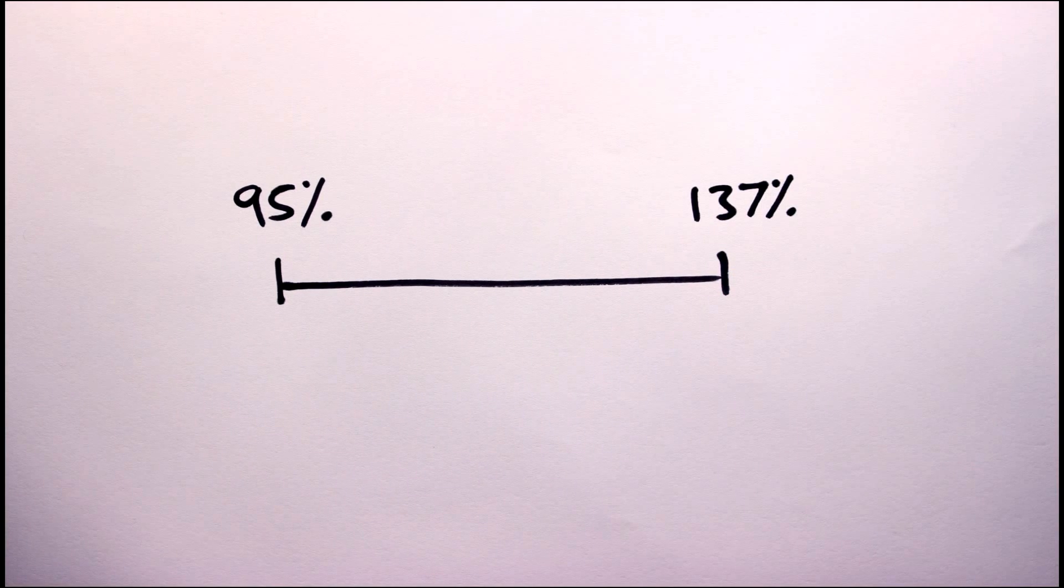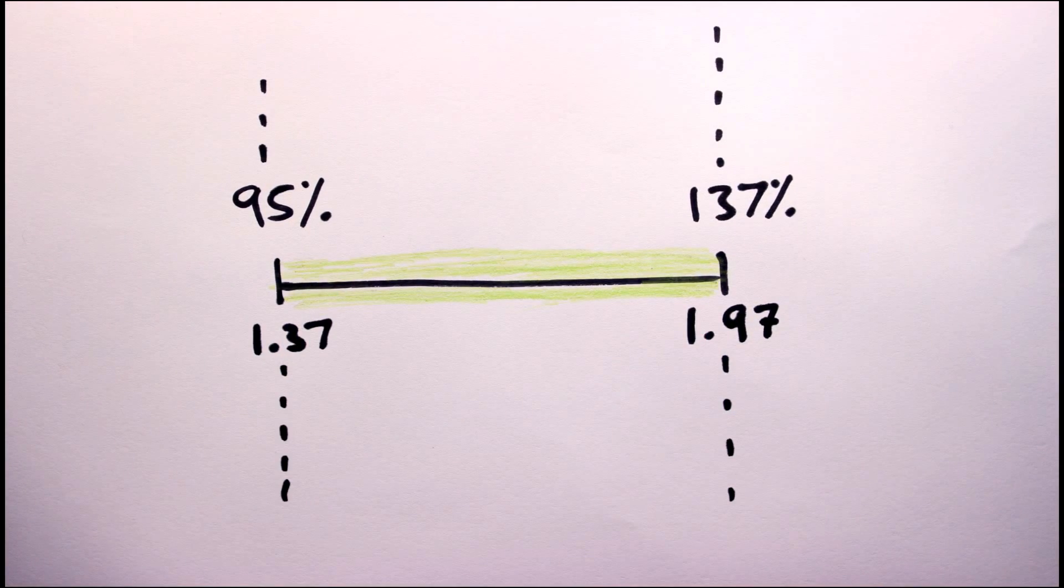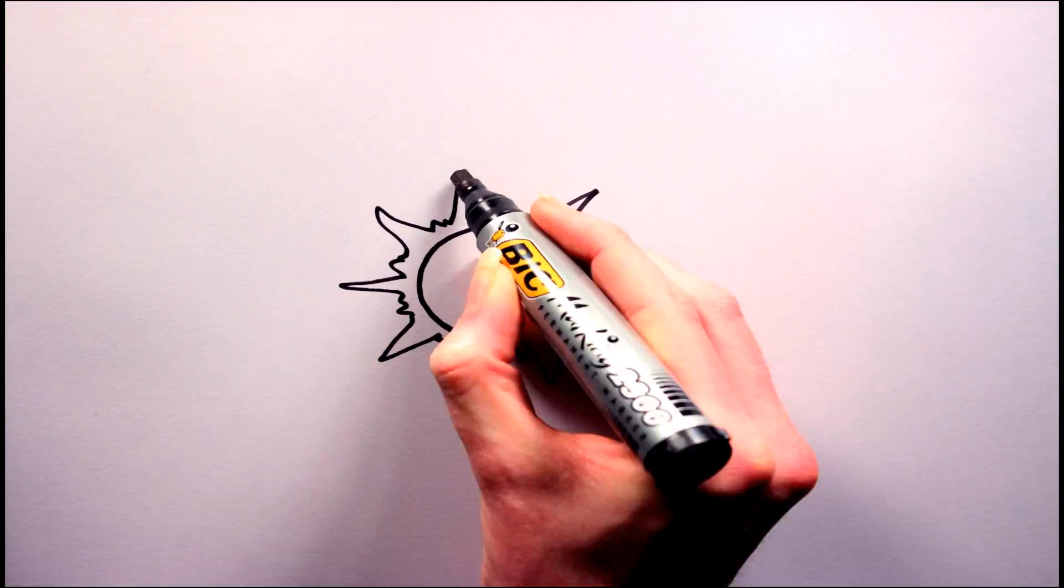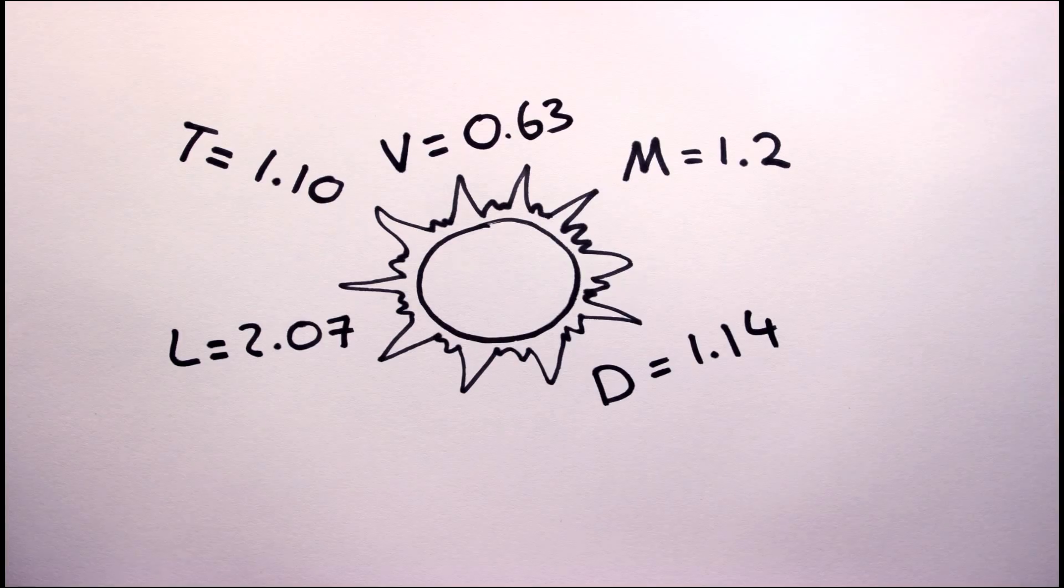The edges of this Goldilocks zone can be calculated as 95 to 137% that distance. So in this case, the inner limit will be 1.37 and the outer will be 1.97. For now, this is all the information we will need. Later, when we look at how to build a planet, we'll add a few more stellar details.